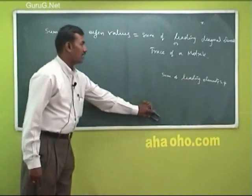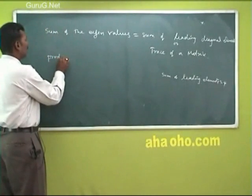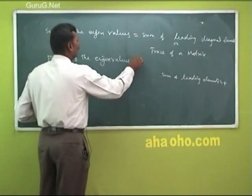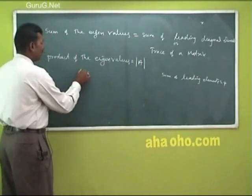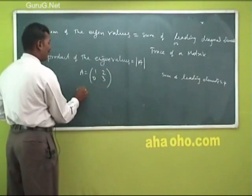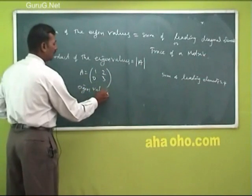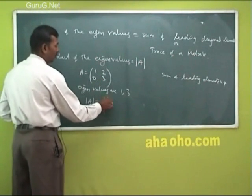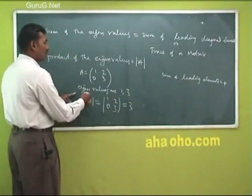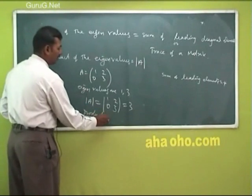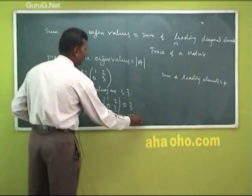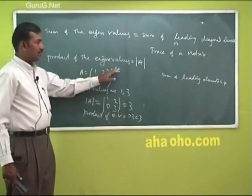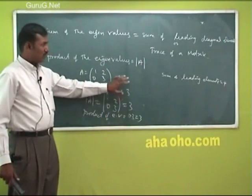The product of the eigenvalues equals the determinant of A. In the example, the eigenvalues are 1 and 3, so the product of eigenvalues equals 1 times 3 equals 3. The determinant of A is also 3. Therefore, the product of eigenvalues equals the determinant of A. This is the example proving that statement.